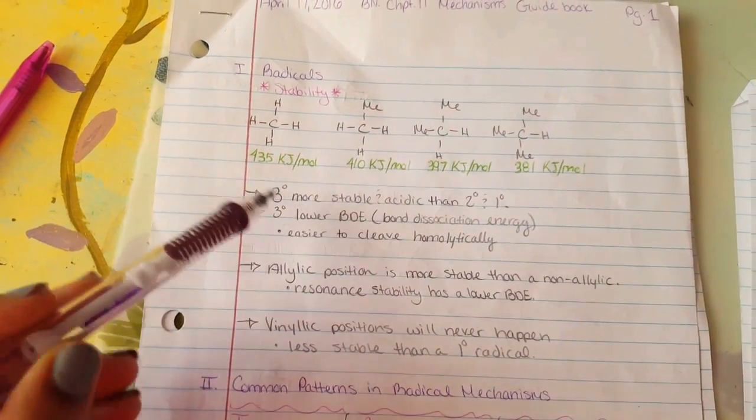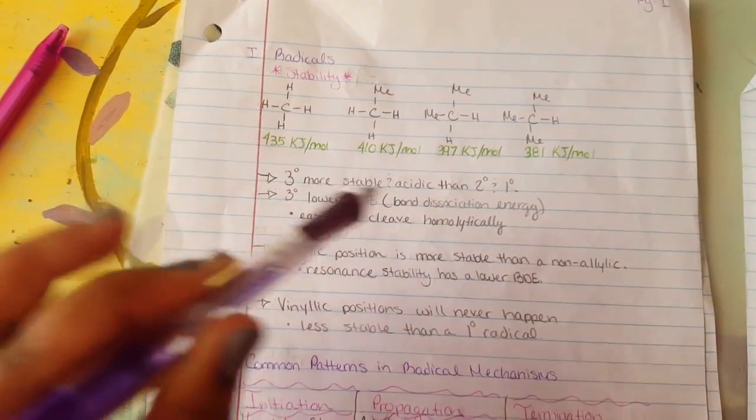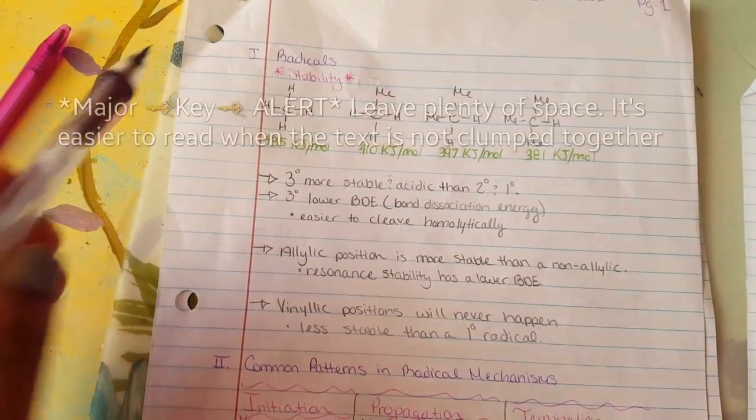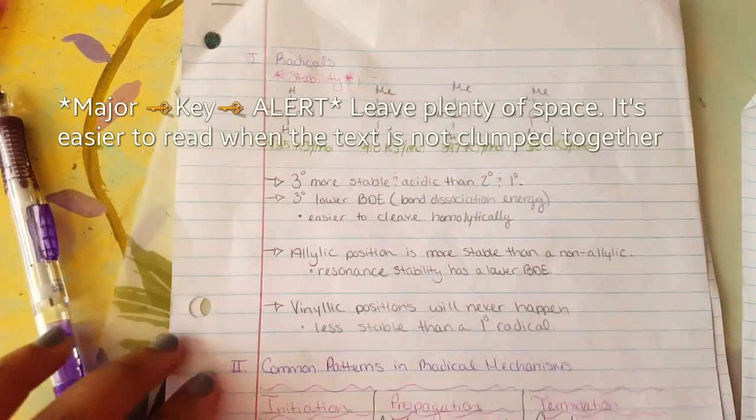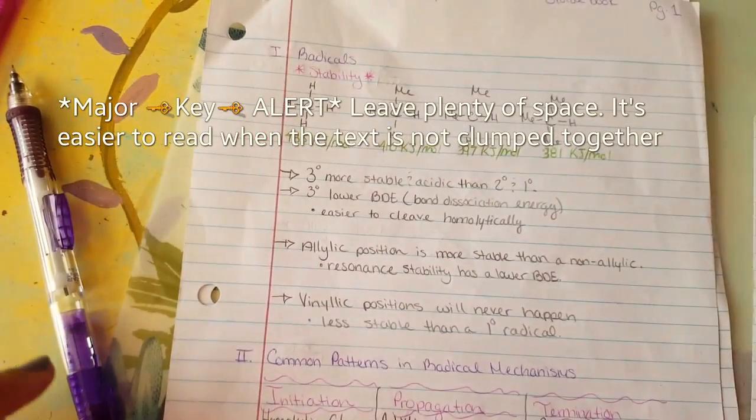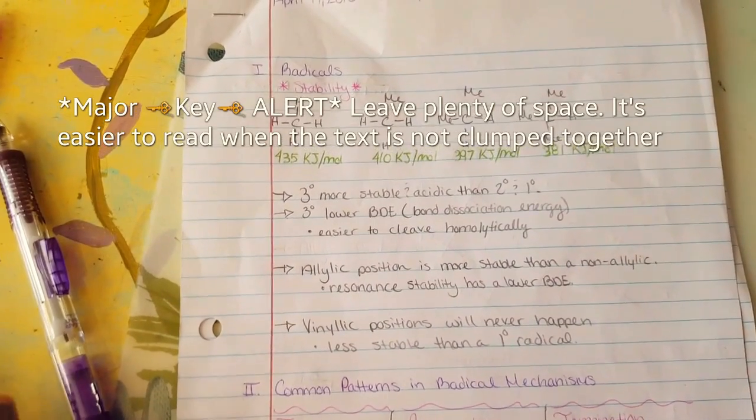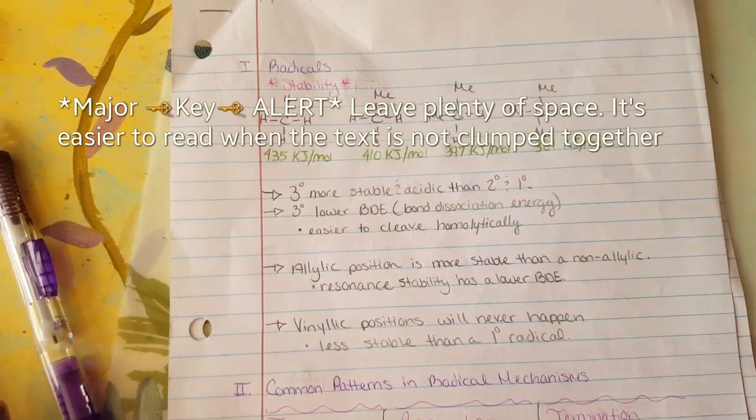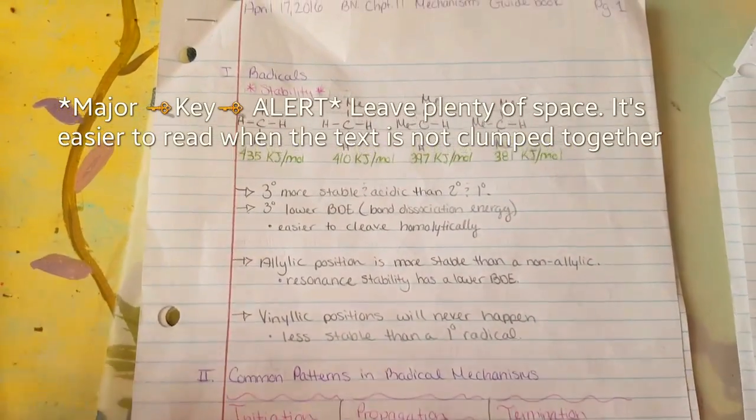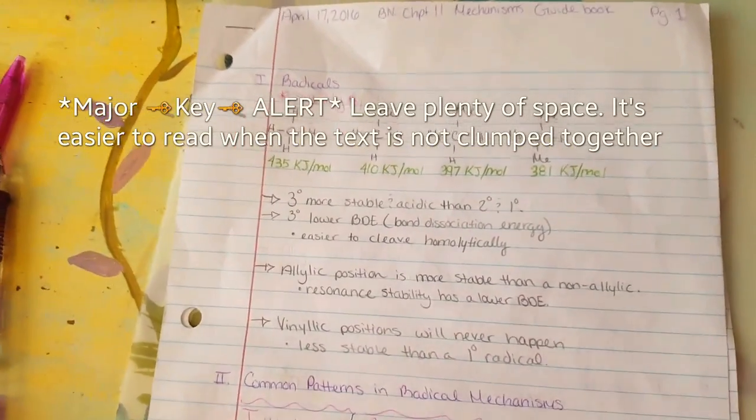You can use bullet points or arrows or numbers or roman numerals for making details about that particular chapter. As you can see I label my titles with roman numerals.